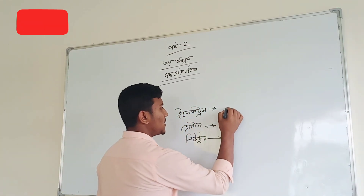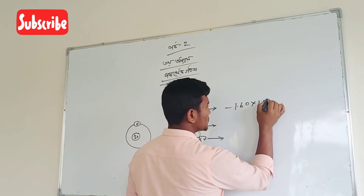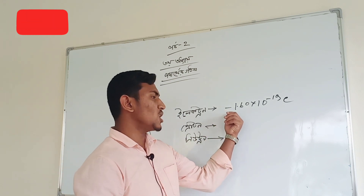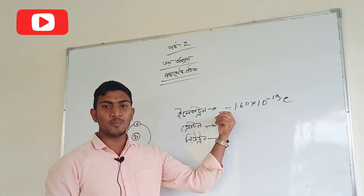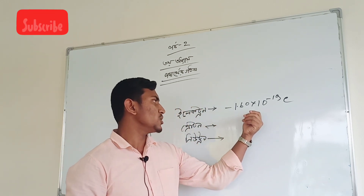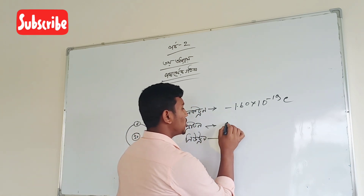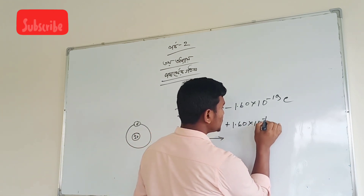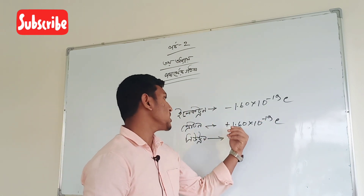The electron is a good thing. The electron has a charge of 1.60 × 10⁻¹⁹. The proton also has a charge.